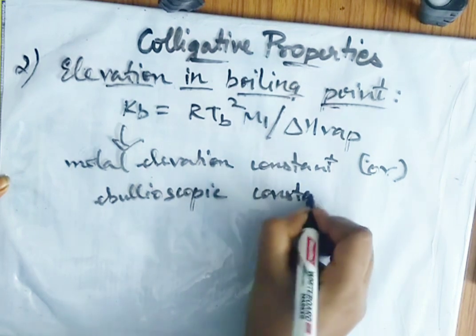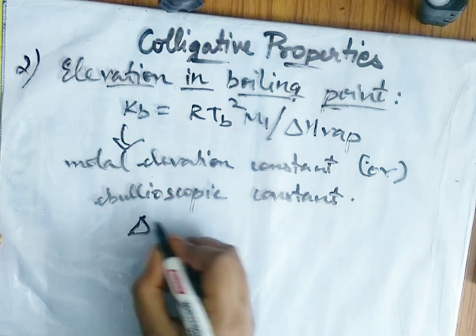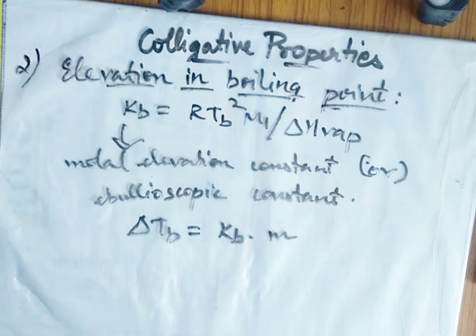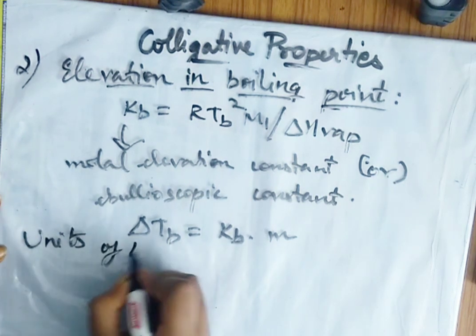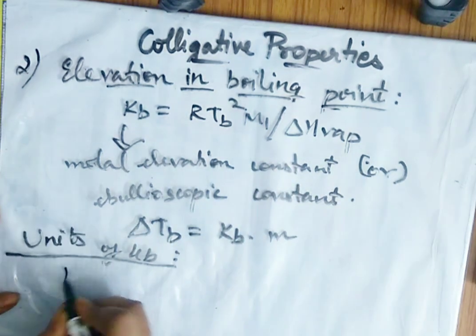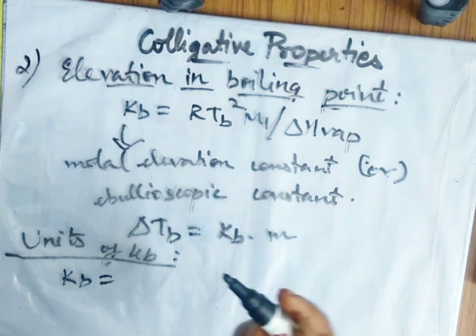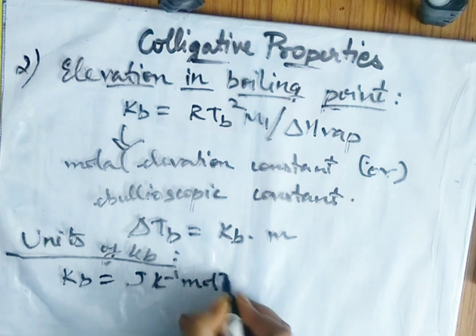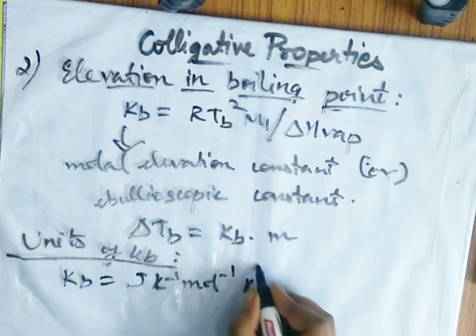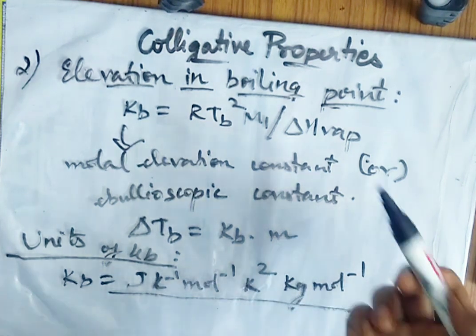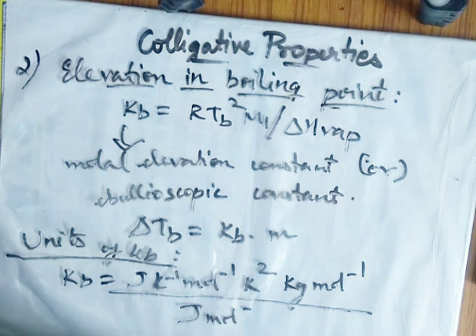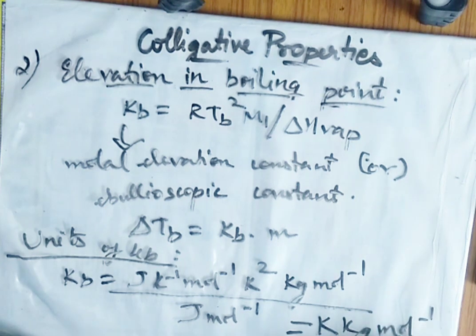The equation can be written as delta Tb equals Kb times m, where m is the molality. The units of Kb work out as: K² from temperature squared, kg/mol from m1, and J/mol from delta H(vaporization) cancels, giving the unit of Kb as Kelvin·kg/mol. This is the unit of the ebullioscopic constant.